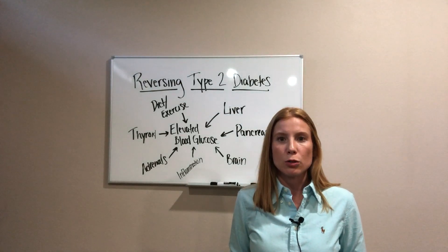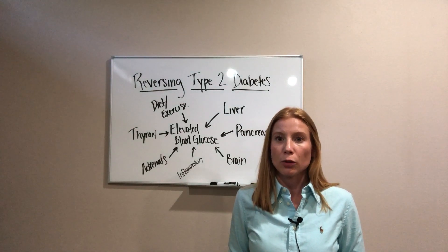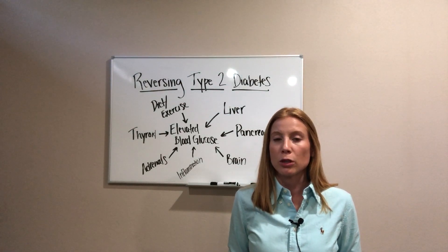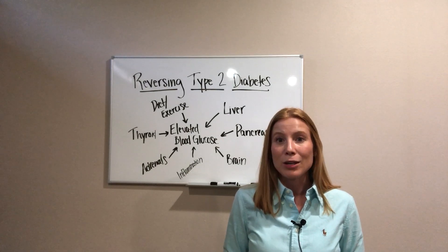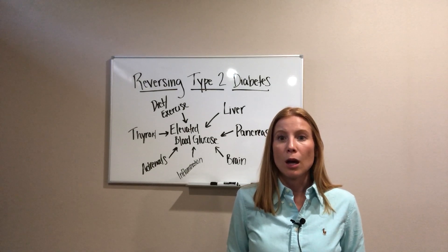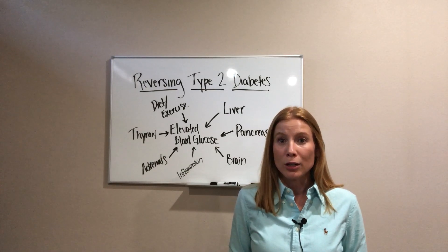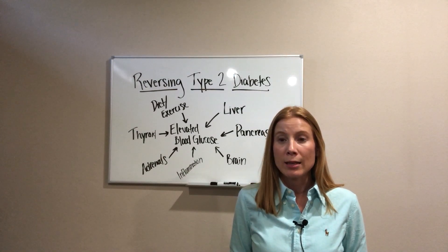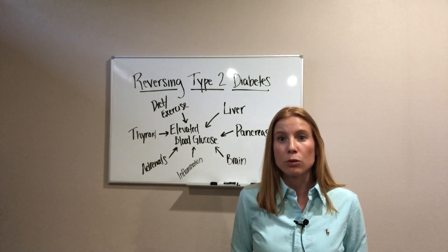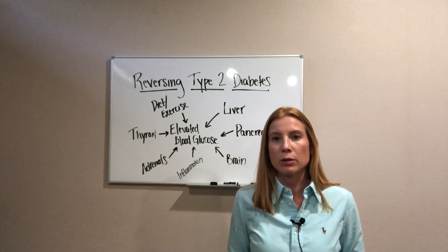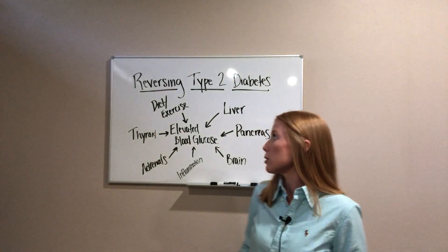Reasons for chronic inflammation could be food sensitivities, hidden infections, poor gut and GI tract health, or autoimmune diseases. Those are things we work to figure out to see if they apply to you.